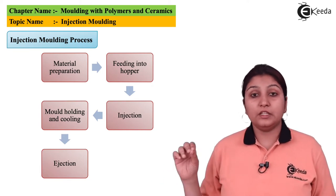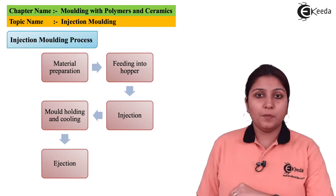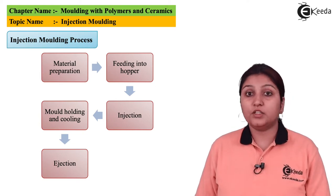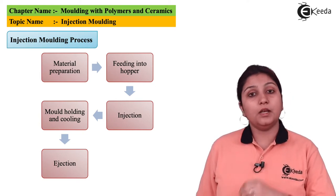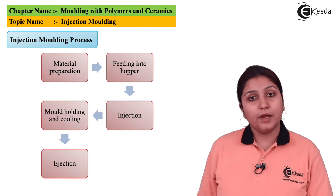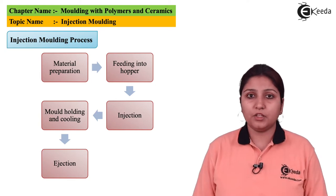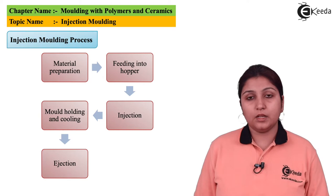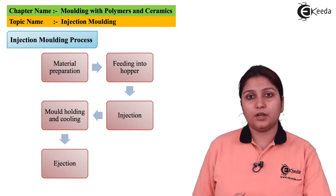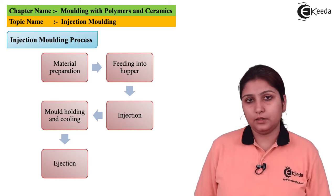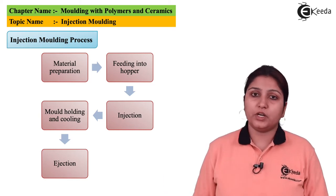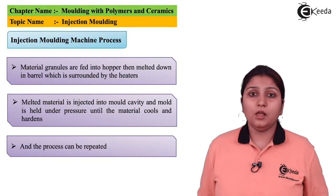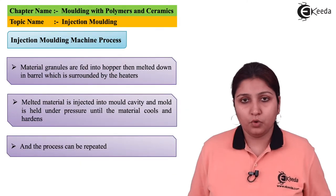Then your material reaches the shape where it has to be formed. The material comes out, is held at a certain temperature, then cooled, and after cooling the material is ejected from the other side. This is the basic flow of an injection molding process.